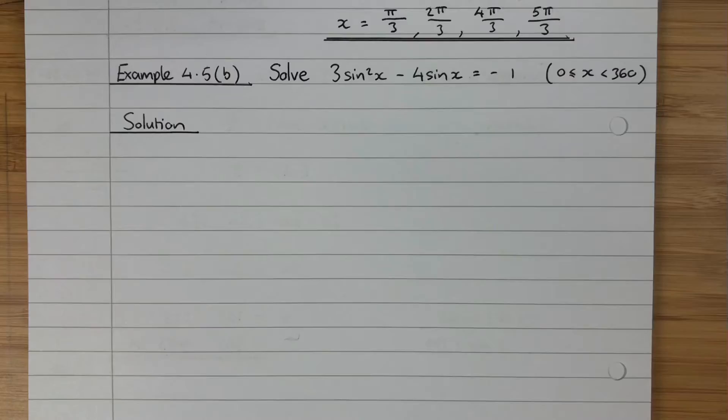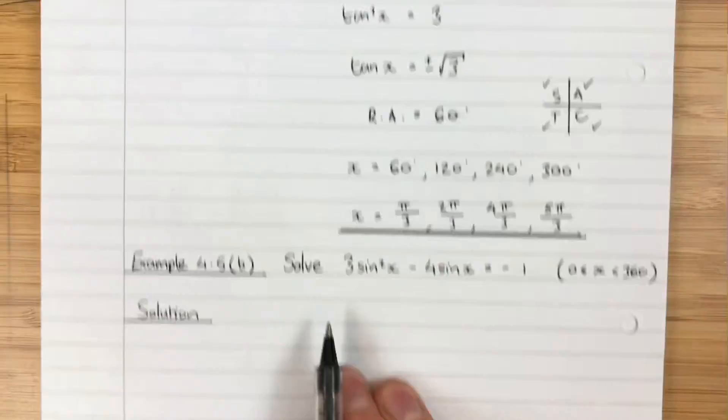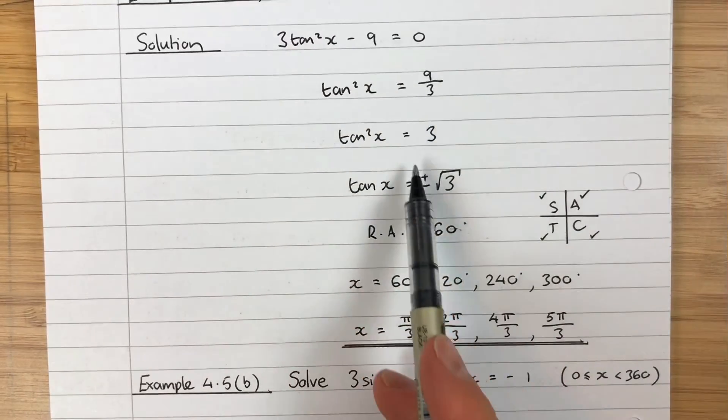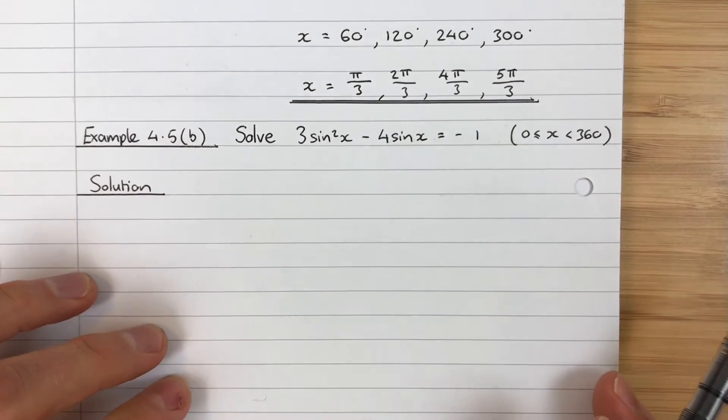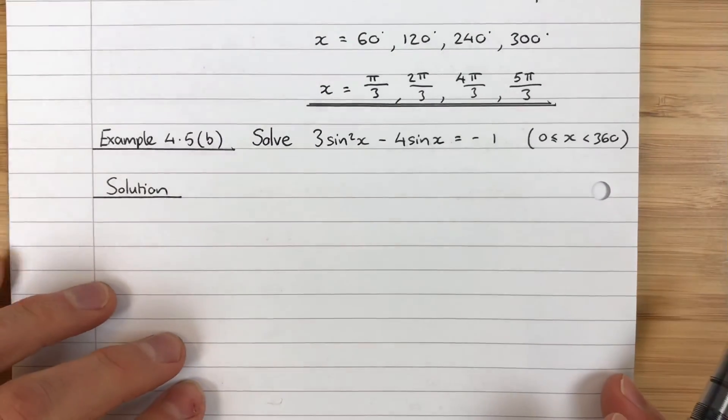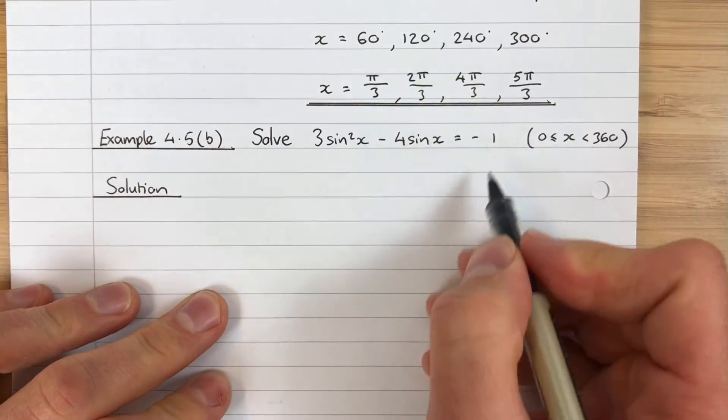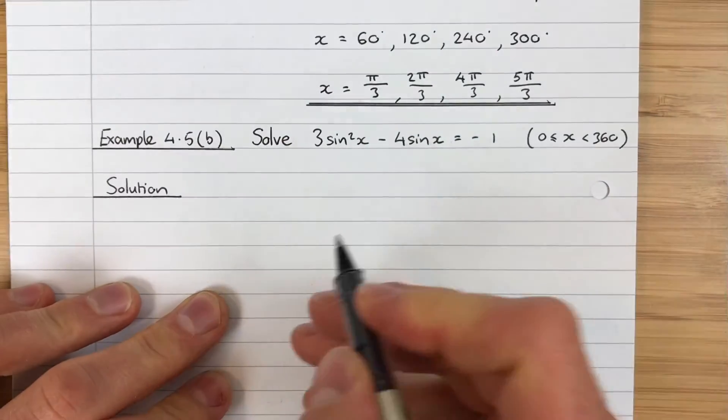This is us really getting into the quadratic side of trig equations now. In this example we only had one trig term, so we could pretty much just go the way we've usually done it. In this one we have no option to isolate the trig term, can't be done. So we have to do something sneaky. We have to treat this as if it's just a normal quadratic equation.